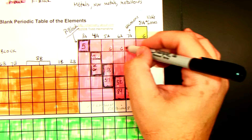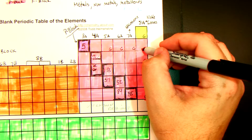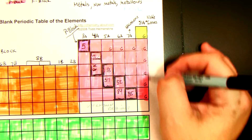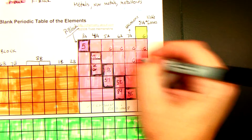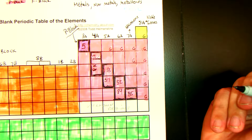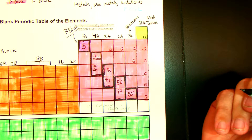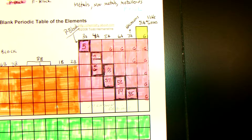All of those elements in the first P-block row are gases, and the one right before it is also a gas — so all of those are your gases.